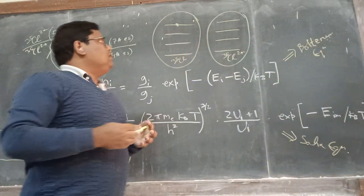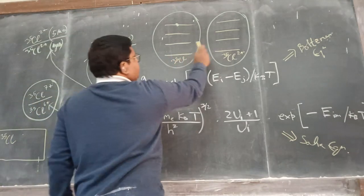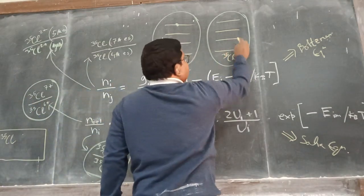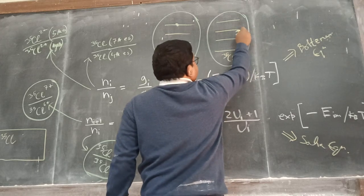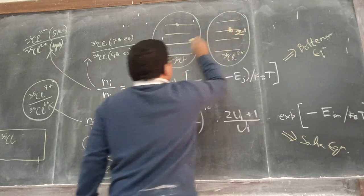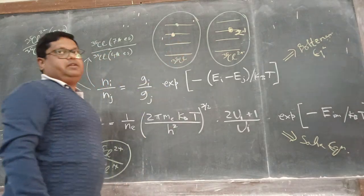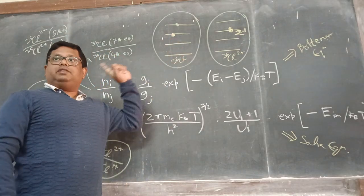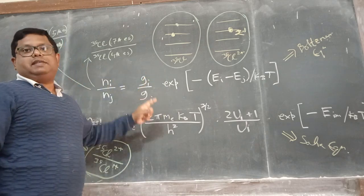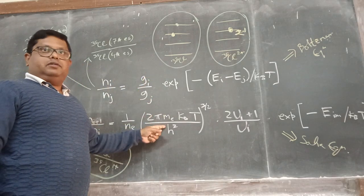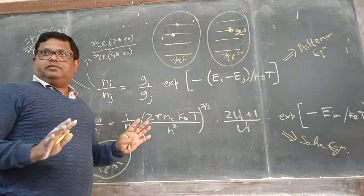But sometimes we need to find how many chlorine-35 2+ ions in the third excited state are there compared to the second excited state of a chlorine-35 neutral atom. For this case, we have to combine both the Boltzmann and Saha equations together.